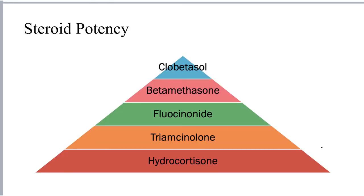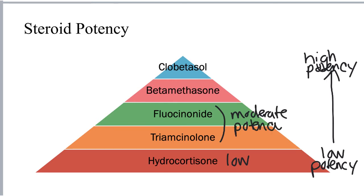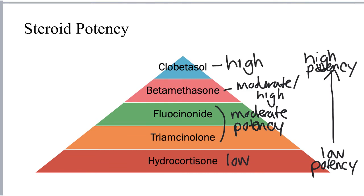This graphic illustrates some of the topical steroids used for atopic dermatitis in order of potency from lowest to highest. Hydrocortisone is the lowest potency topical steroid, followed by triamcinolone and fluocinonide, which are both considered moderate potency. Next is betamethasone, which is moderate to high potency, and finally clobetasol, which is a very high potency topical steroid. The higher potency steroids should not be used on areas of thin skin, such as the face or the neck, because the adverse effects can be more severe in those areas.